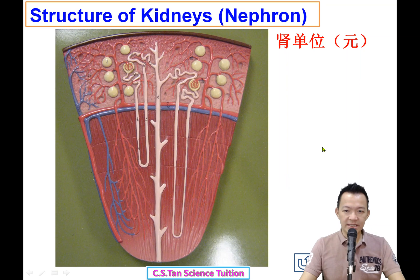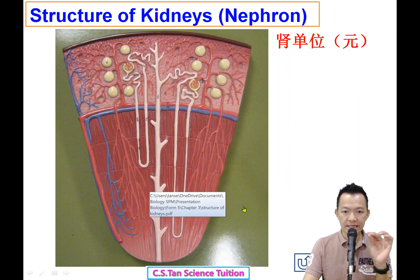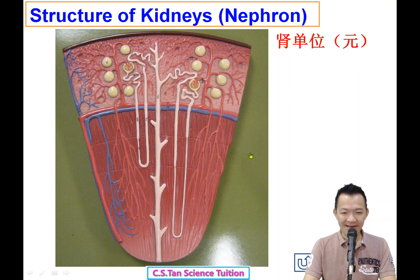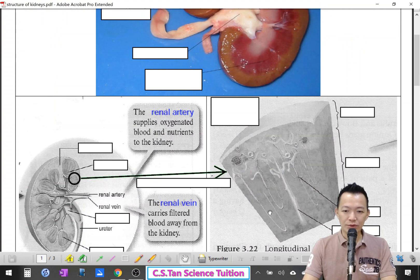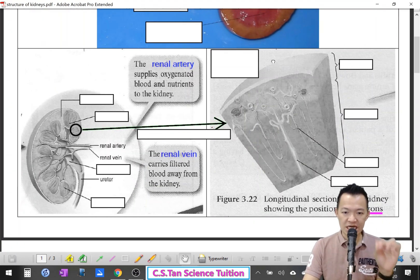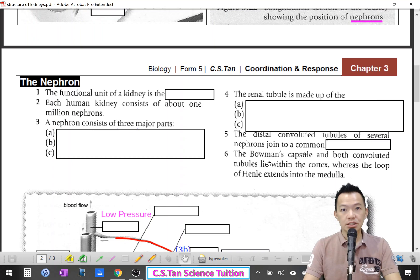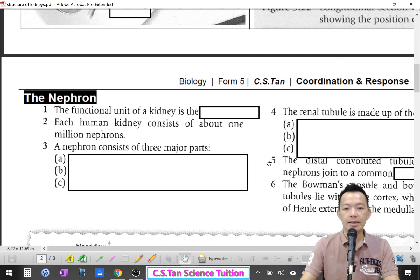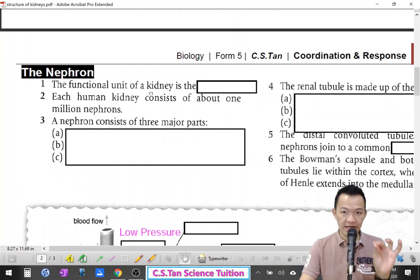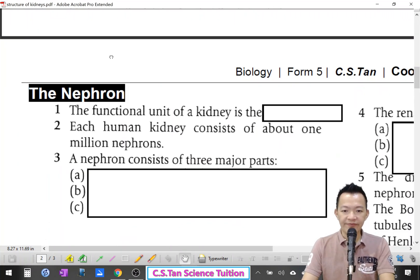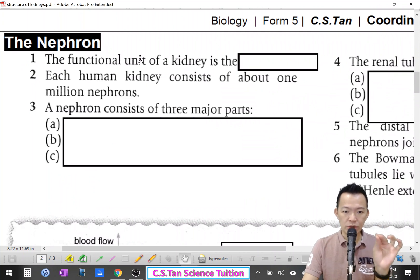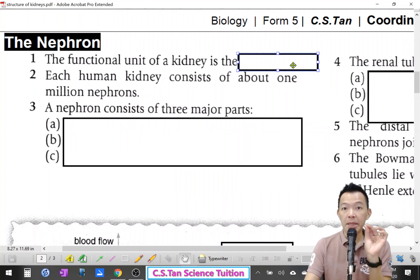Okay, quite excited because of the big title — nephrons. So nephrons is a small unit that makes up our kidneys. Slowly, the functional unit of the kidney — so inside the kidney, the part that is actually doing the work is called nephrons.